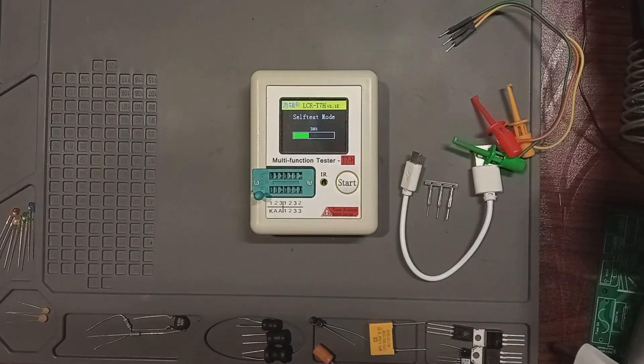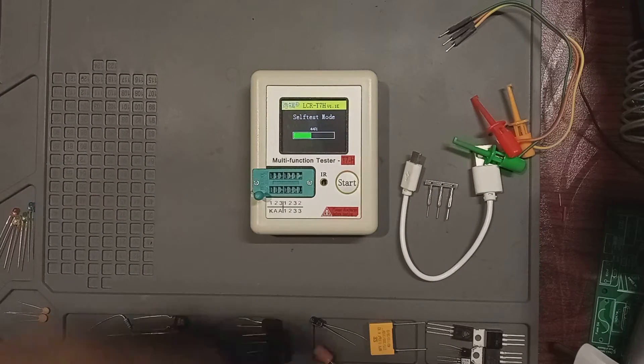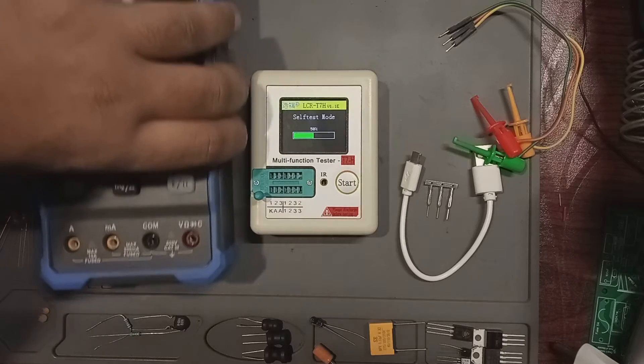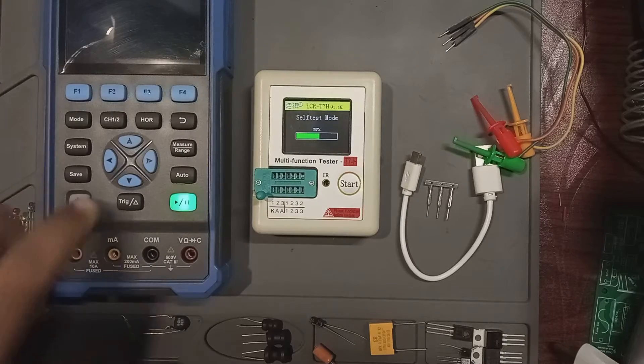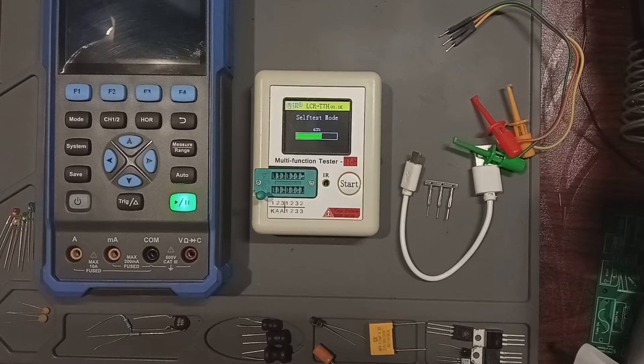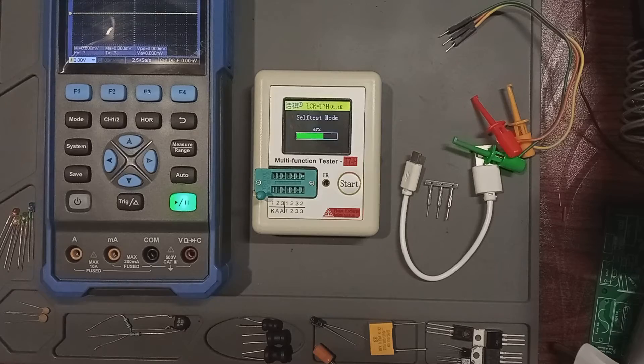And the test progresses until it reaches 100% signaling the completion. Now, as the device progresses with its self-test, let's prepare our oscilloscope to observe how it measures various components. Subsequently, we will test the components directly.